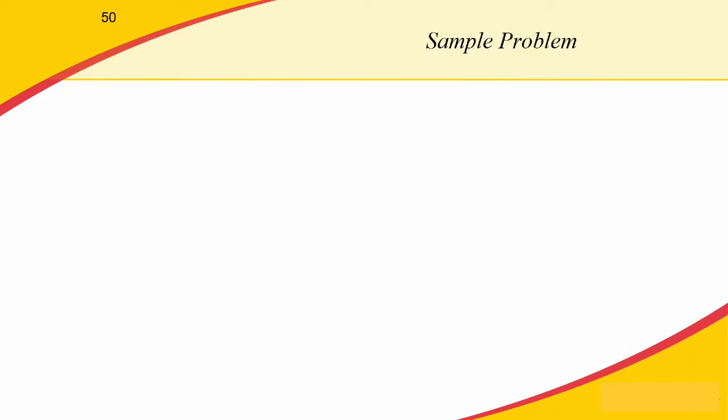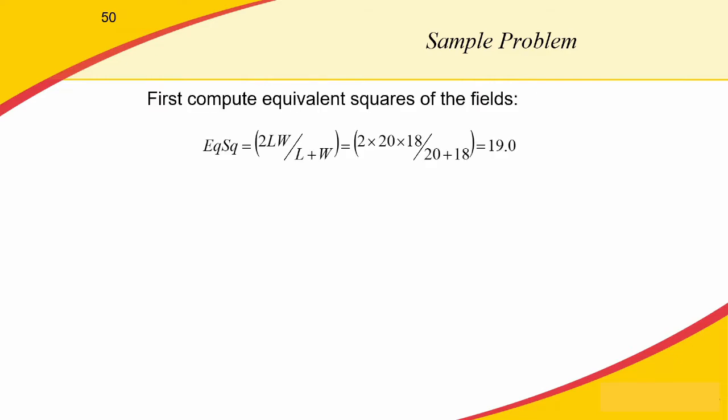How do we get started? First, let's compute our equivalent square field size to use in the lookup tables for our output factors. We have rectangular fields of 20 cm by 18 cm. Using the equivalent square equation from part one: 2 times 20 times 18 divided by 20 plus 18, which gives us an equivalent square field size of about 19. So we'll look up a 19 by 19 square field in our tables.